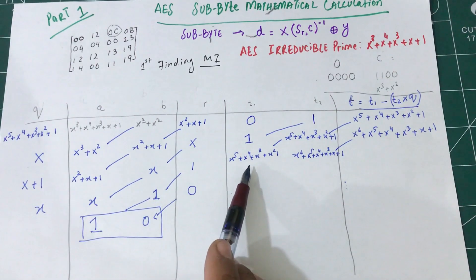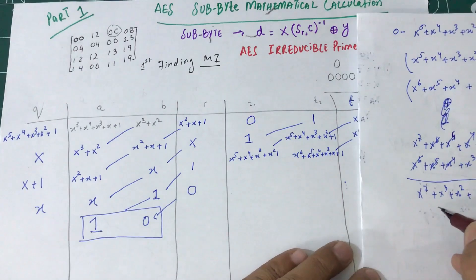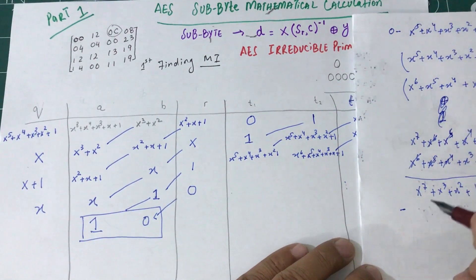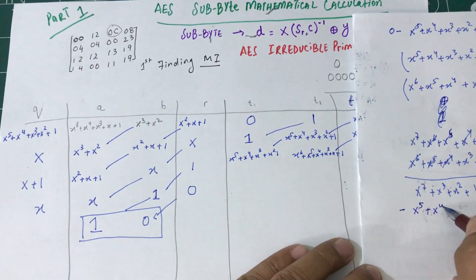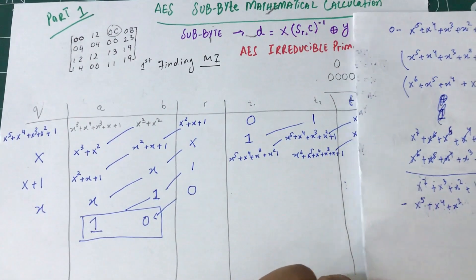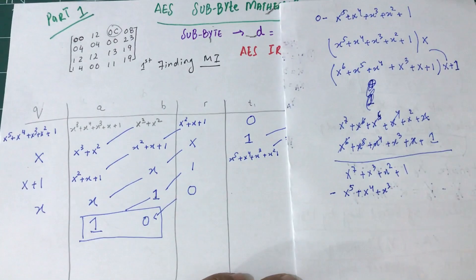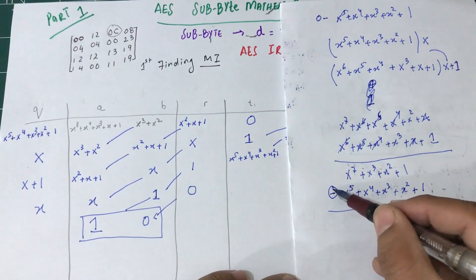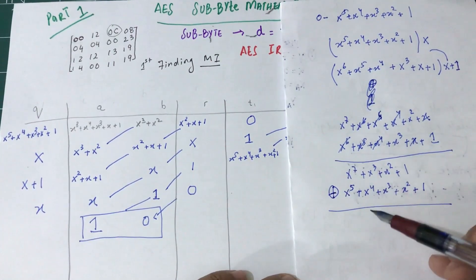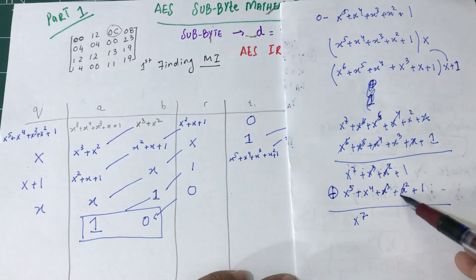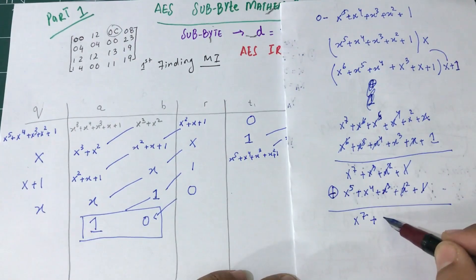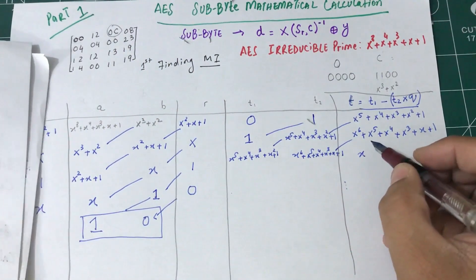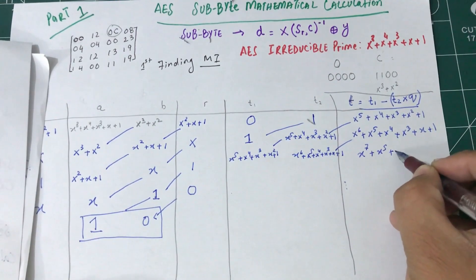Now I need to subtract t1, which is x^5 plus x^4 plus x^3 plus 1. Applying modulo 2 arithmetic again: x^3 cancels, x^2 cancels, 1 cancels. I end up with x^7 plus x^5 plus x^4.